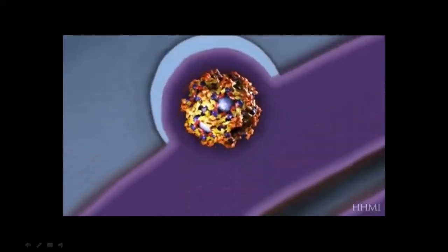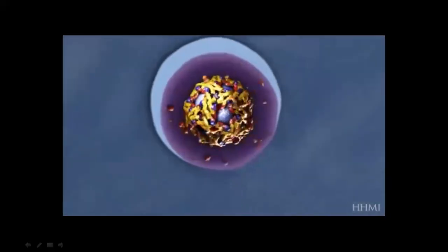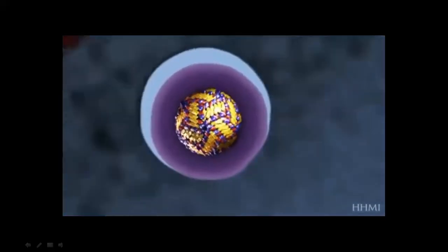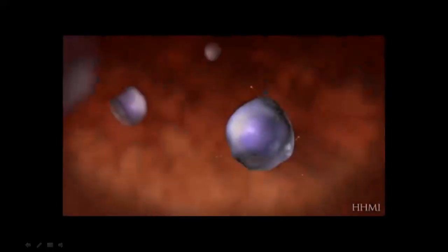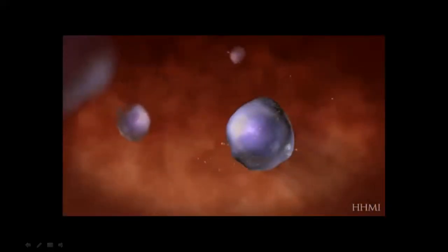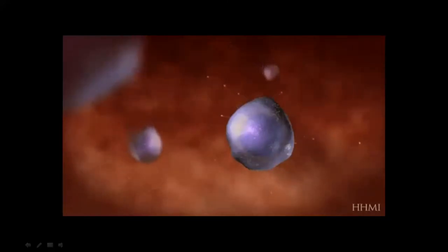Before reaching the surface, the pre-membrane proteins are processed to make the virus mature. The mature virus is then released from the cell, and now the virus is ready to infect a new cell.